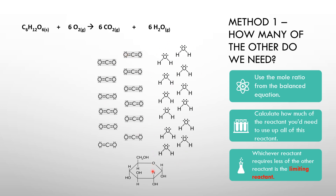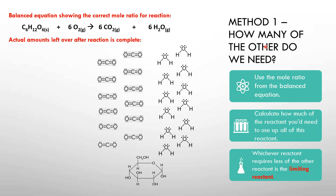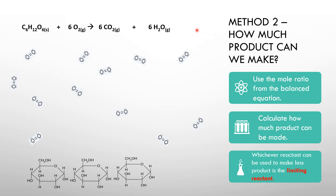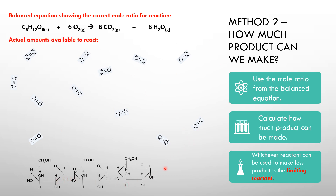We've gone through Method 1 to show how to figure out which reactant is the limiting reactant, and we've shown how much product should have been made and how much of the reactants should be left over. The one mole of glucose on the right is not a product — it's an unreacted reactant, something left over when the reaction is done. Now here's Method 2: how much product can we make?